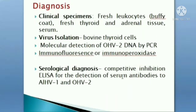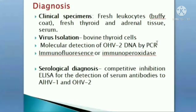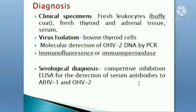For diagnosis of Malignant Catarrhal Fever, clinical specimens include buffy coat, fresh thyroid and adrenal gland tissues. Virus isolation from bovine thyroid cells can be done. Molecular detection of Ovine Herpesvirus 2 by PCR, immunofluorescence, and immunoperoxidase-based tests can be performed. For serological diagnosis, competitive inhibition ELISA for detection of serum antibodies is used.